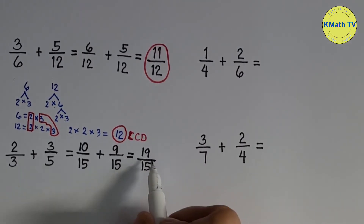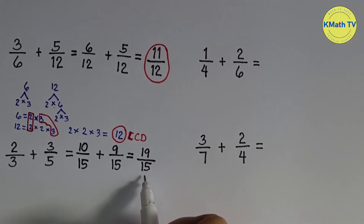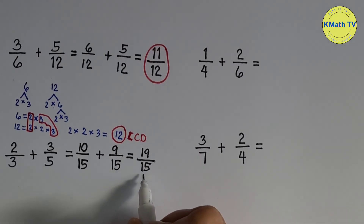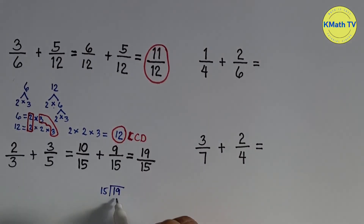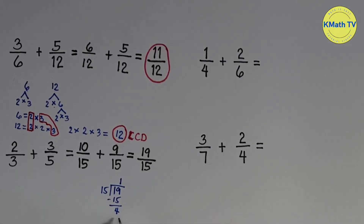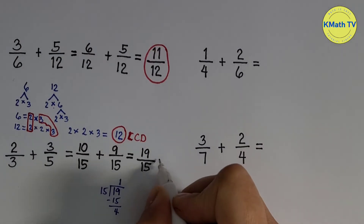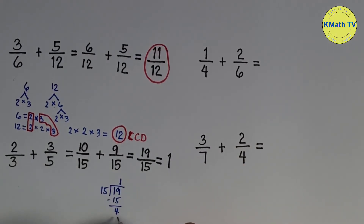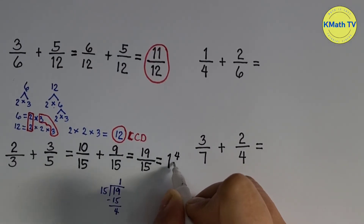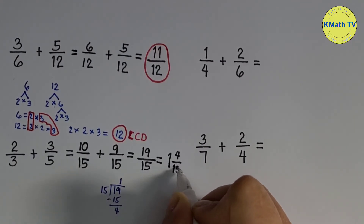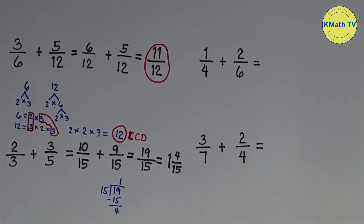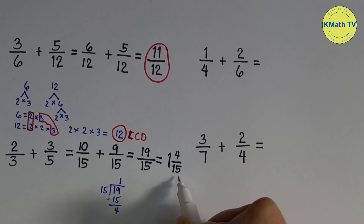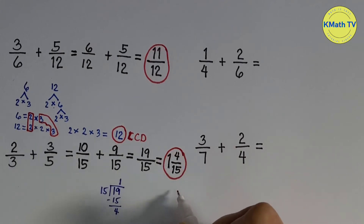19 fifteenths is an improper fraction because the numerator is greater than the denominator, so we need to simplify it by dividing the numerator by the denominator. If we divide 19 by 15, the quotient is 1 and the remainder is 4. Since there is a remainder, let's write the answer as a mixed number. The quotient 1 is the whole number; the remainder 4 is the numerator; and the divisor 15 is the denominator. Note: when changing an improper fraction to a mixed number, the denominator does not change. The answer is 1 and 4 fifteenths. The fraction 4 fifteenths is in lowest term because 4 and 15 have no common factor aside from 1.